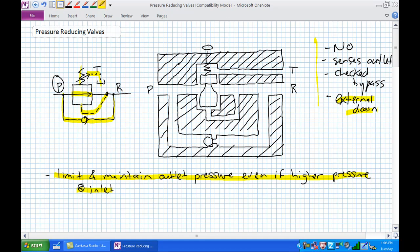Why is it externally drained? Because R is still a pressurized port. Even though you're reducing from, let's say, 1,000 PSI and your pressure reducing valve is set to limit pressure to 500 PSI, R still has 500 PSI on it, and you cannot internally drain that. So you need to externally drain a pressure reducing valve.